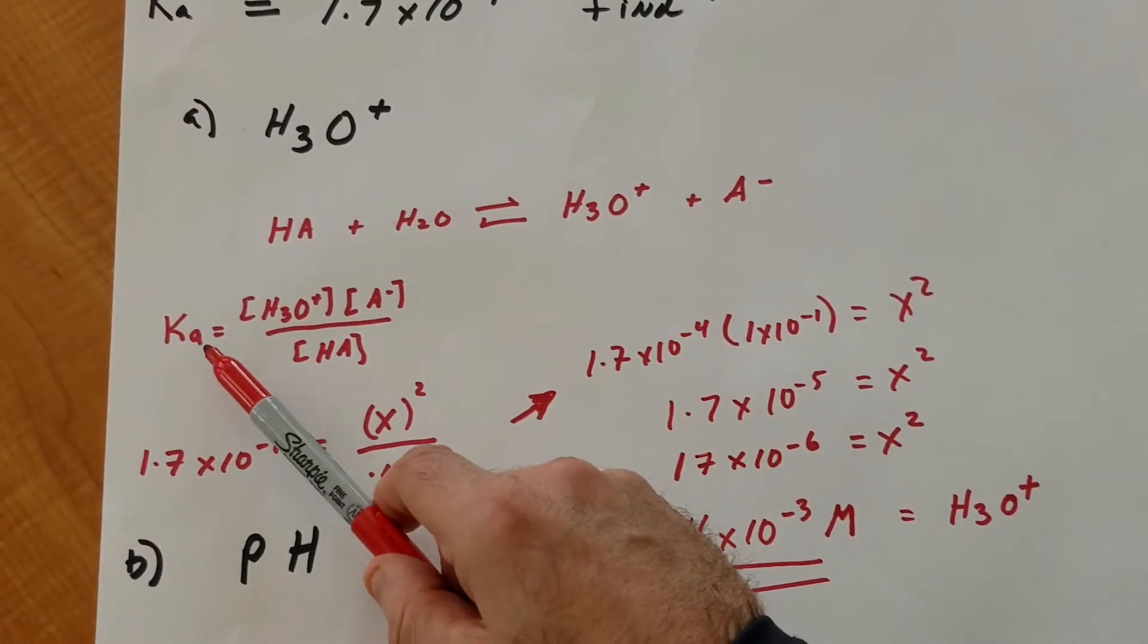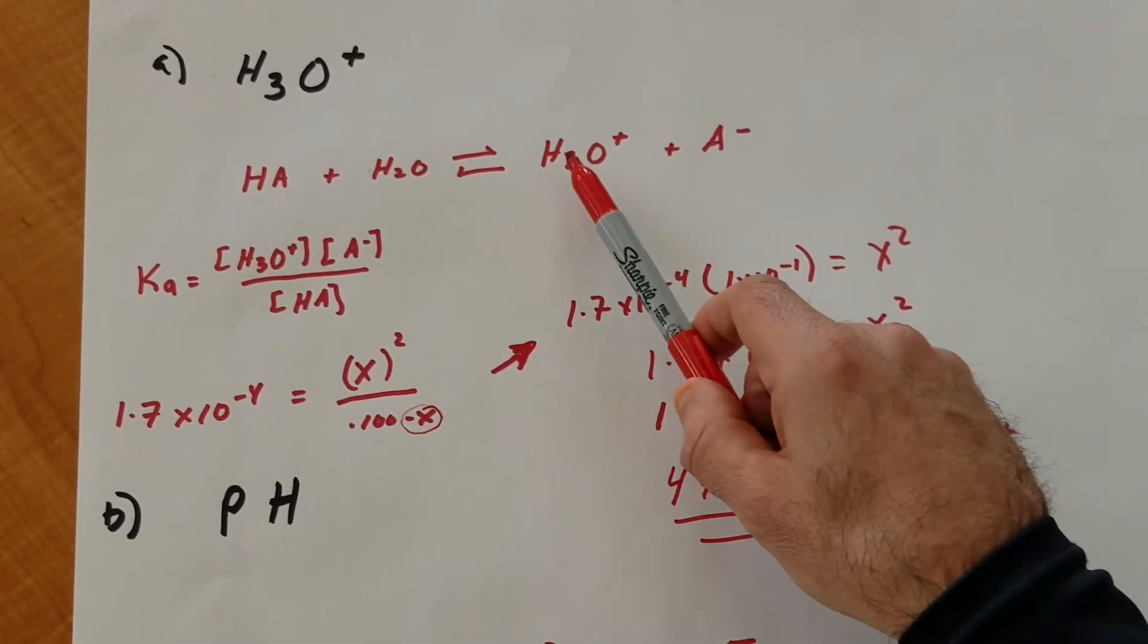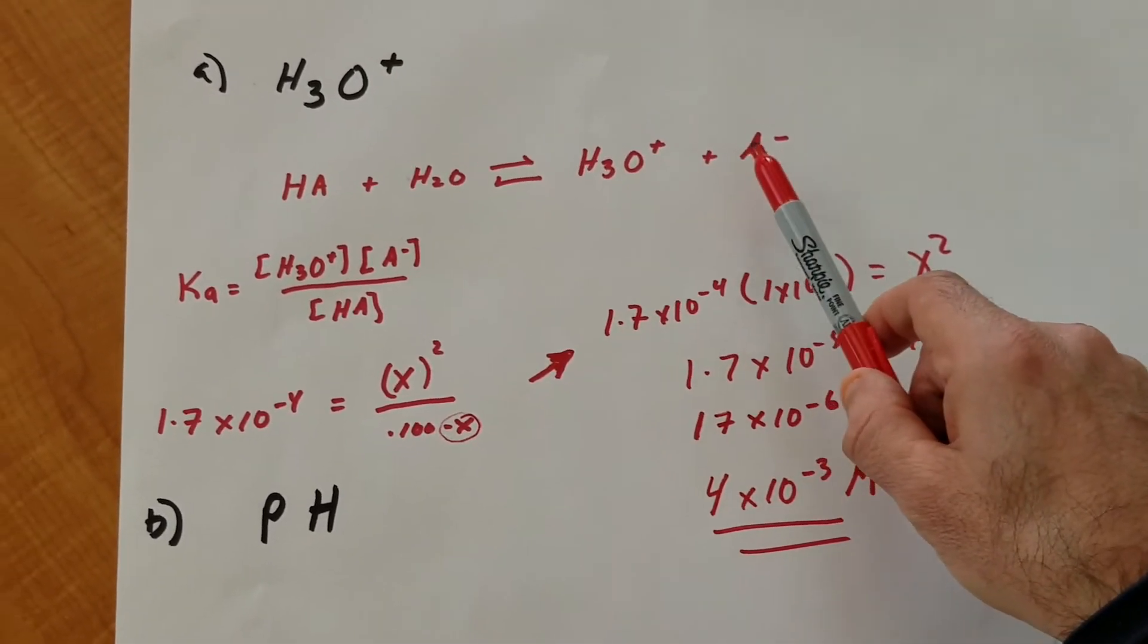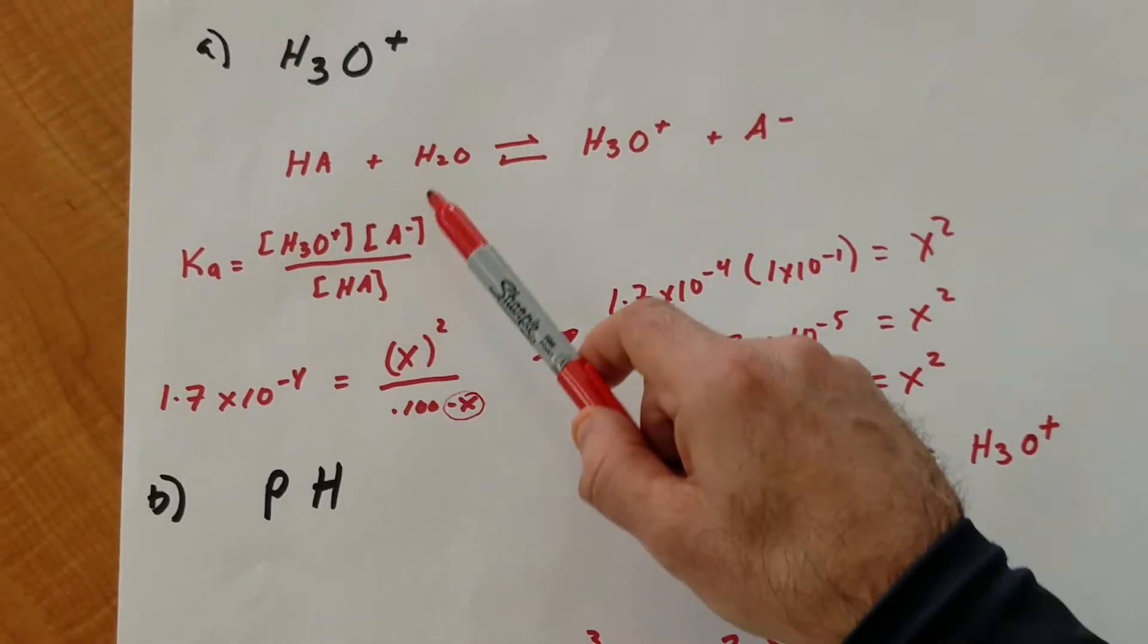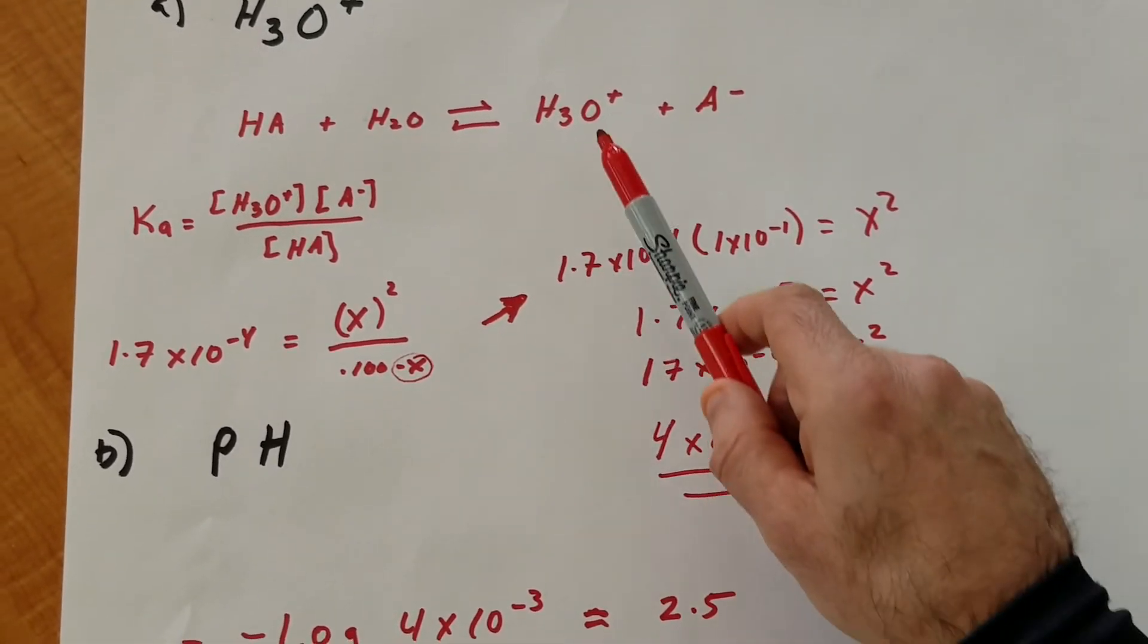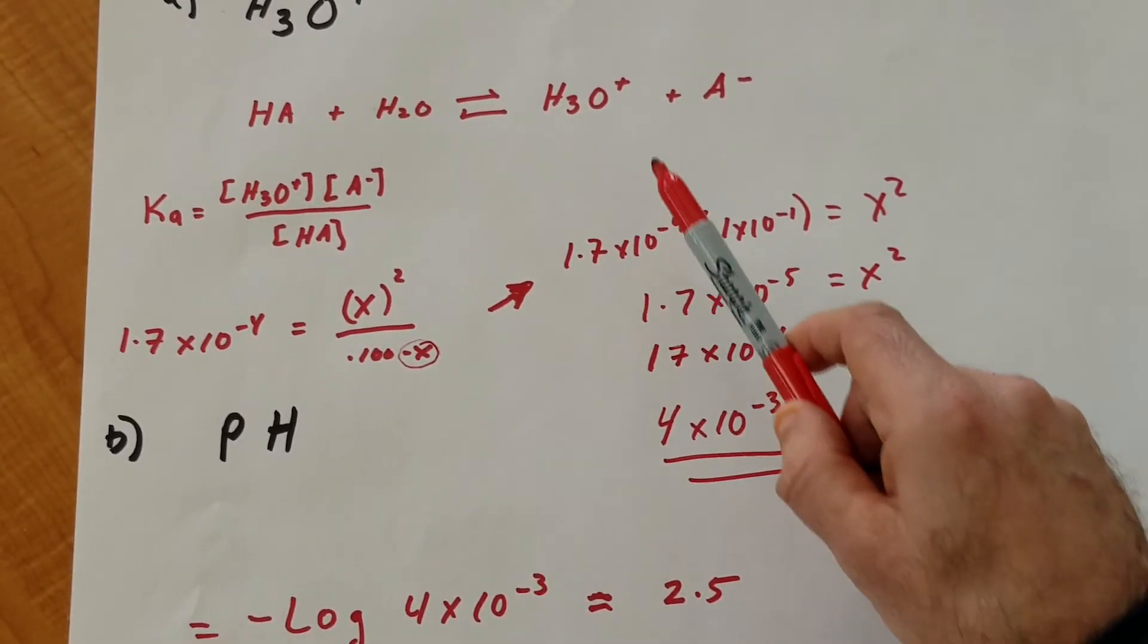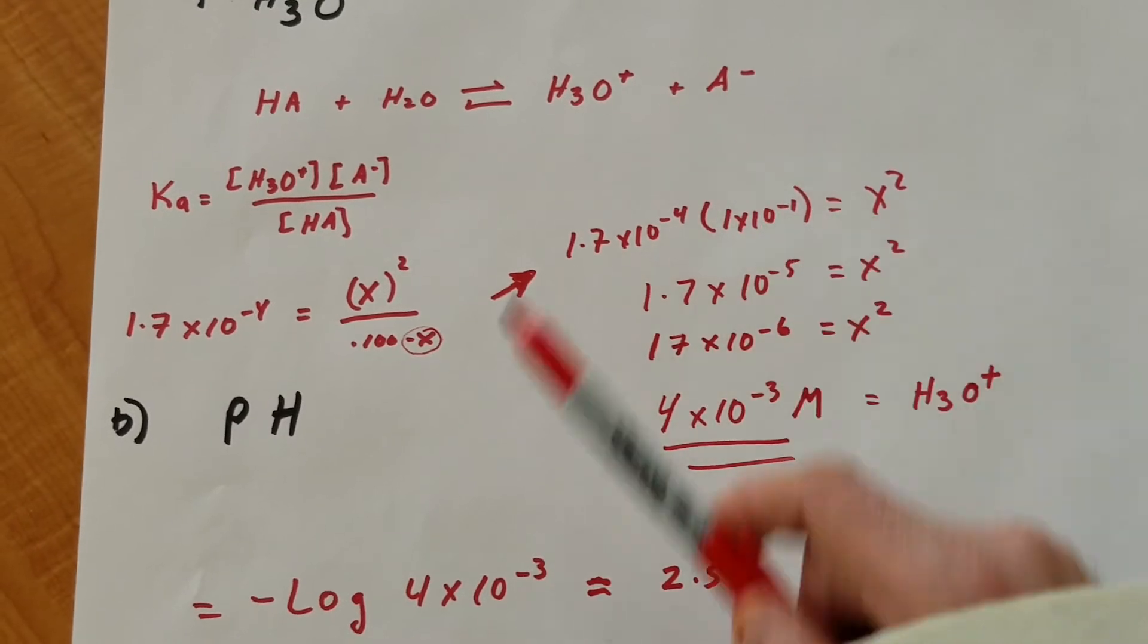Next, we write the Ka. The Ka is simply the products divided by the reactants. So it's going to be the H3O+ times the A- divided by HA, and we neglect the water. Now, notice that H3O+ and A- are in a one-to-one ratio. So I'm going to call this X, and this X.